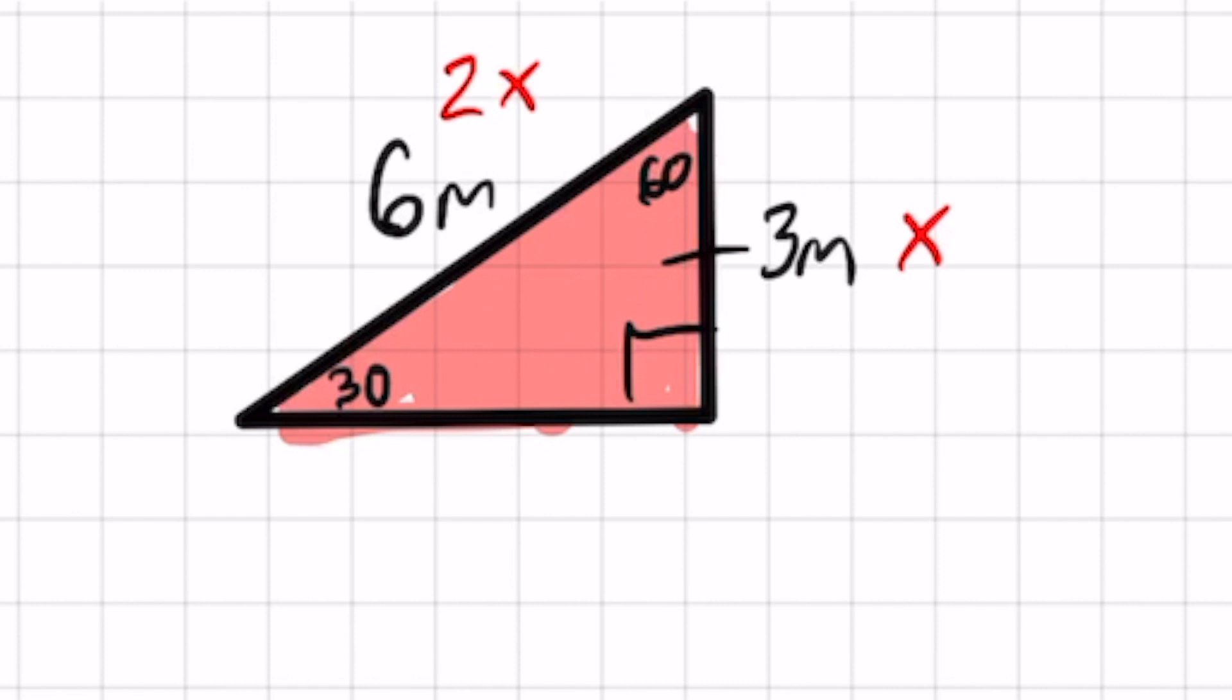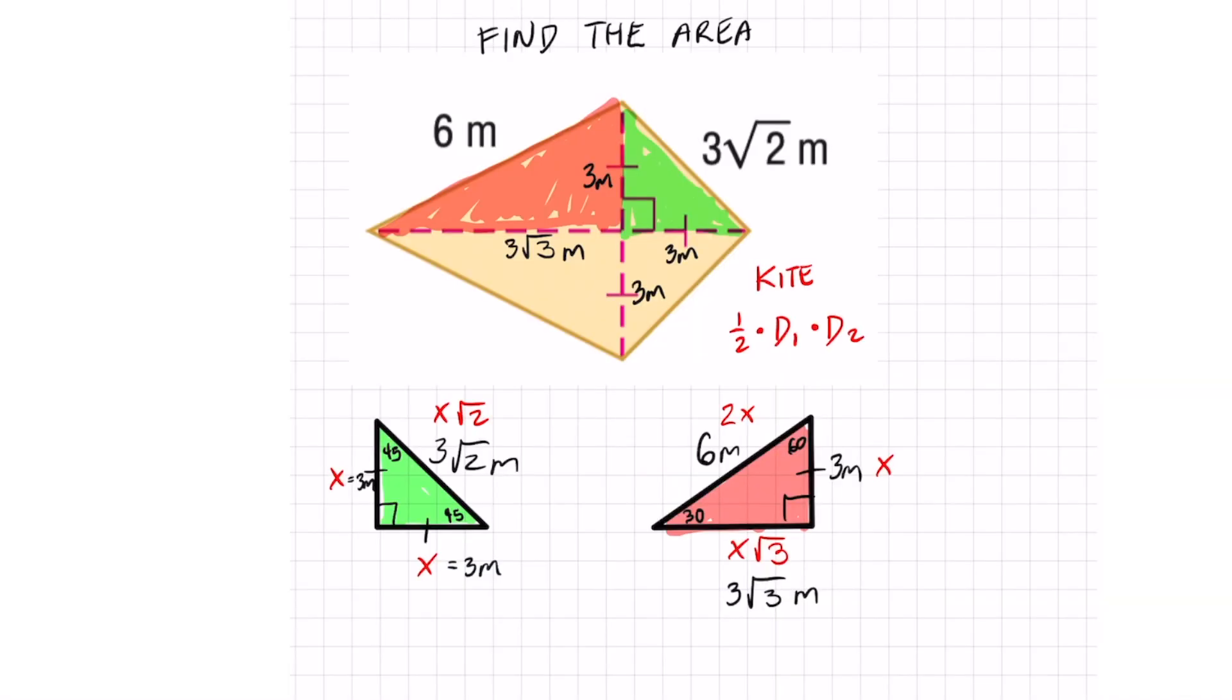Well, luckily, I have my X right here. My X is three. You don't have to do Pythagorean theorem because that's going to be three root three, if you remember that. Awesome. Now we got both our diagonals and we can now plug it into the formula.